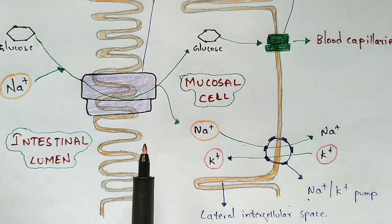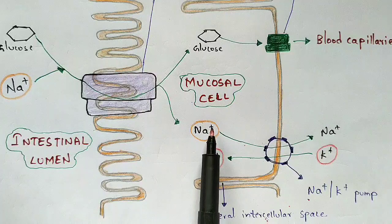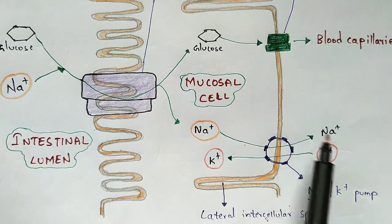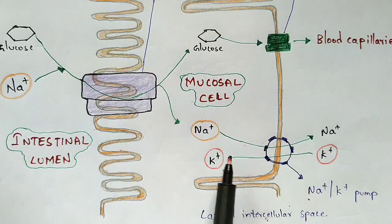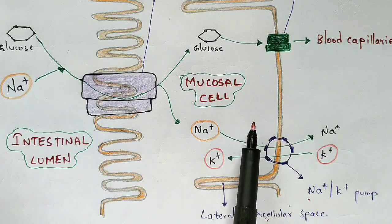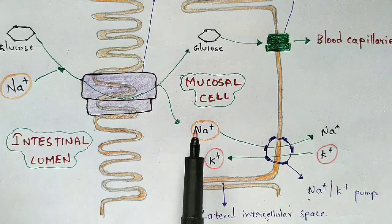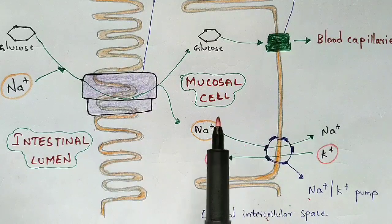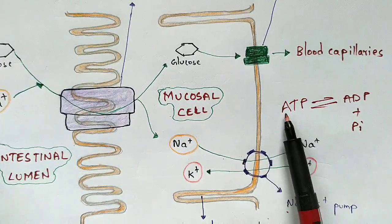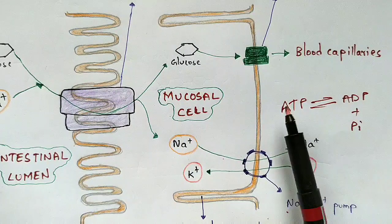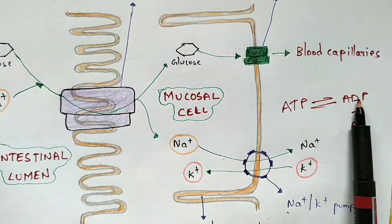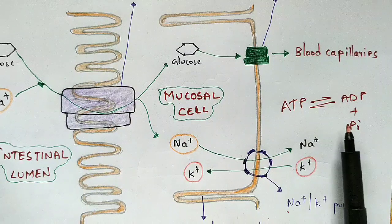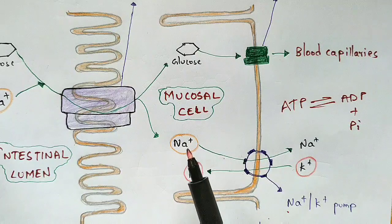The sodium molecules remaining in the mucosal cell use ATP as energy to pass back out of the mucosal cell. The K+ (potassium) ions present in the intestinal lumen then enter the mucosal cell. This process involves ATP hydrolysis: ATP is hydrolyzed into ADP and one inorganic phosphate. The inorganic phosphate acts as the energy molecule utilized by the Na+ ion to move back out.